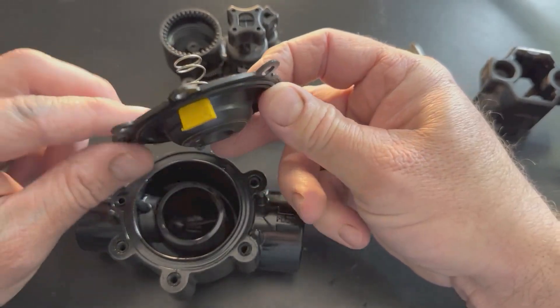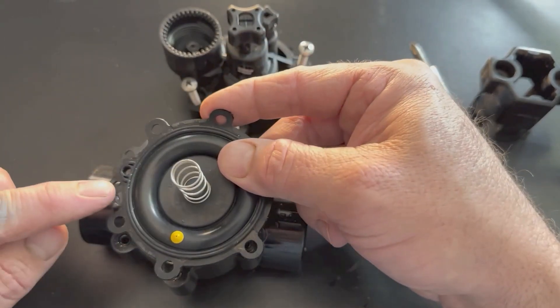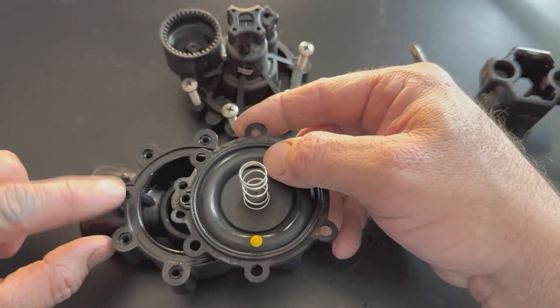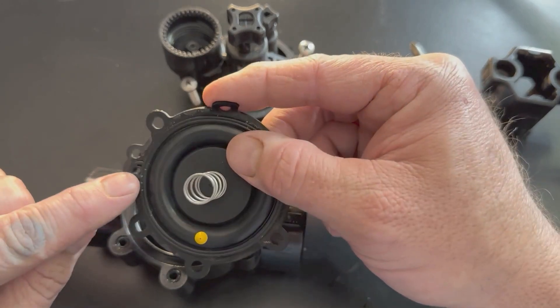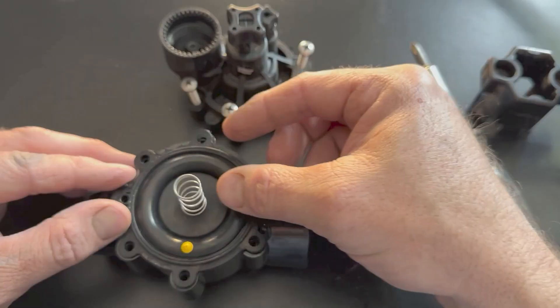This is the diaphragm that you would end up changing if it gets messed up. When you're putting it back on, you've got these two holes that line up with these two little tabs. And you've got to make sure this hole goes right over that because that's where your solenoid goes. That's how it's going to open up.